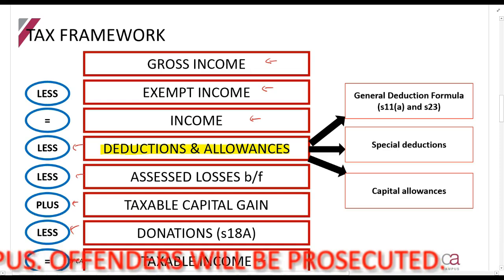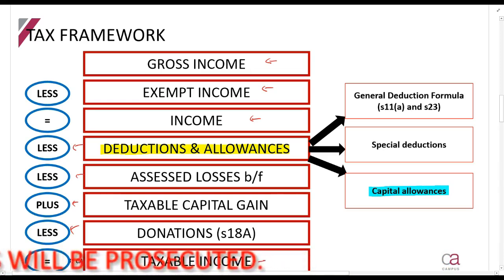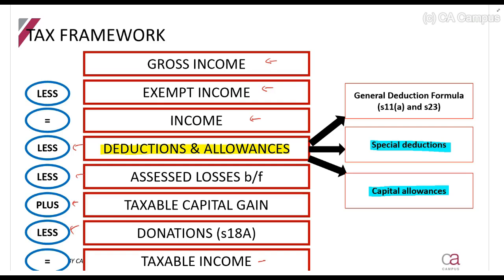When you look at deductions and allowances, there are three broad categories. First, capital allowances — for example, if you buy a machine or a factory, you get an allowance you can claim as a deduction, almost like depreciation from the tax perspective. Then we have sections considered special or specific deductions, where the act and government have identified certain transactions and specified how you should claim a deduction — for example, legal costs, leasehold improvements, and learnership allowances.